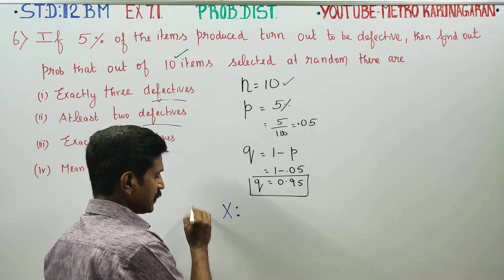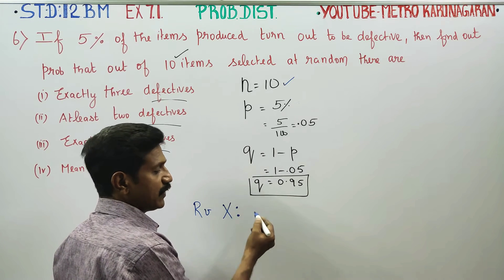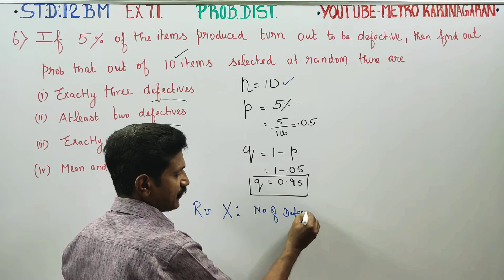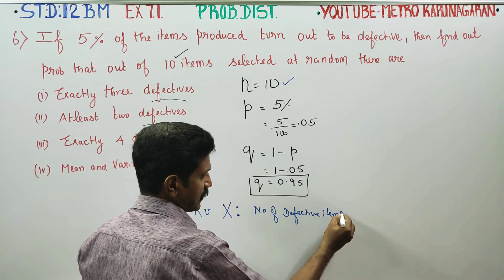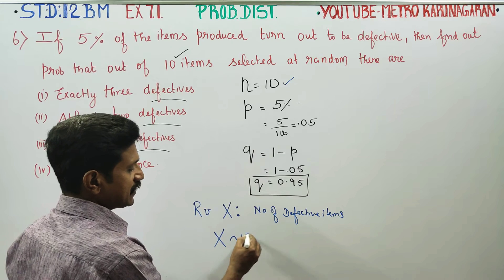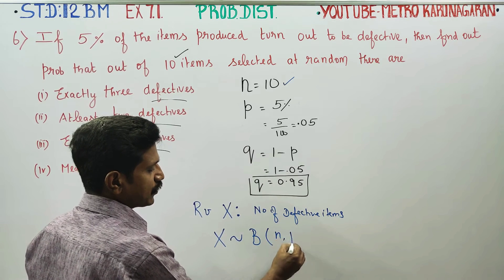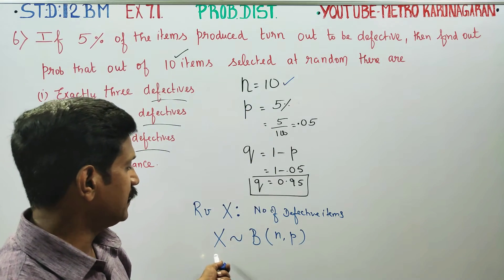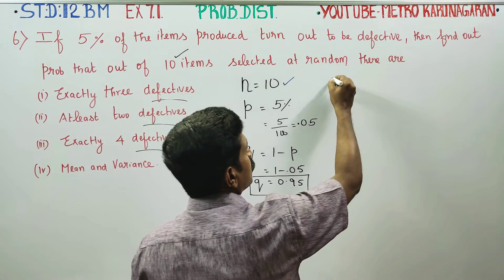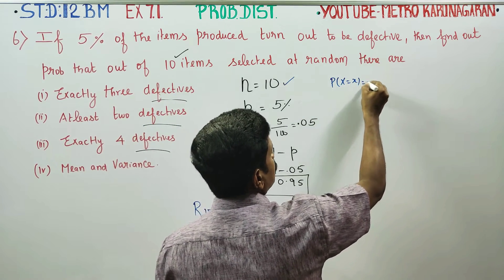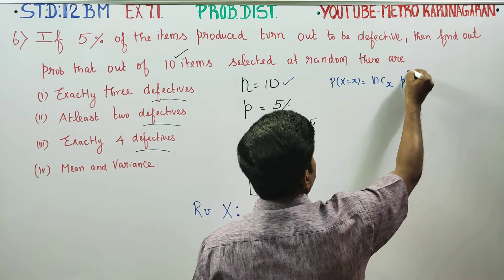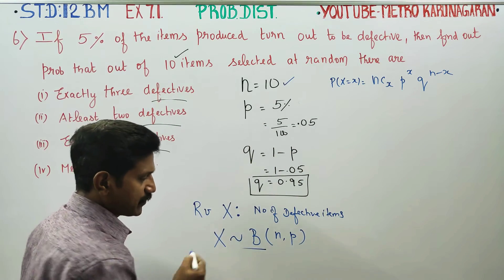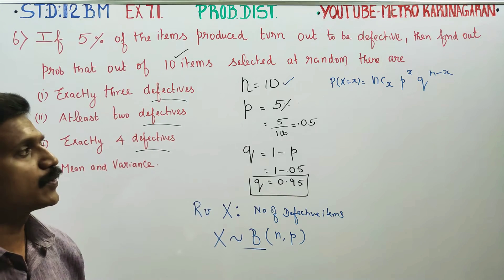X is the random variable representing the number of defective items. Since the conditions satisfy n, p, q for a binomial distribution, we will use the binomial distribution formula.